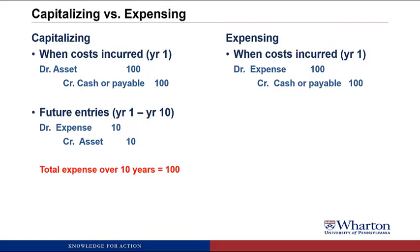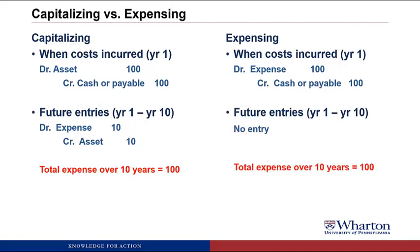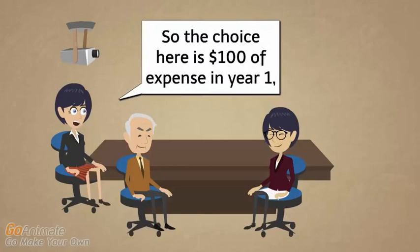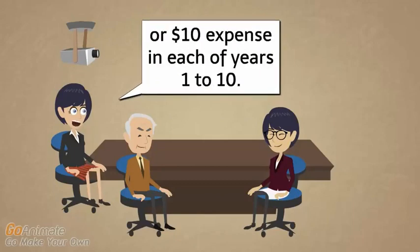When we talk about expensing a cost, we take the same cost, and in this case, we debit expense immediately, so we recognize the entire cost as an expense with no asset. Then there are no journal entries that we need in the future, and we end up with the same expense over the 10 years of 100 in this case. Capitalizing versus expensing doesn't change the total expense you recognize — it still has to equal the original cost. Instead, it changes the timing of when that expense hits your income statement. So the choice here is $100 of expense in year one, or $10 expense in each of years one to 10.